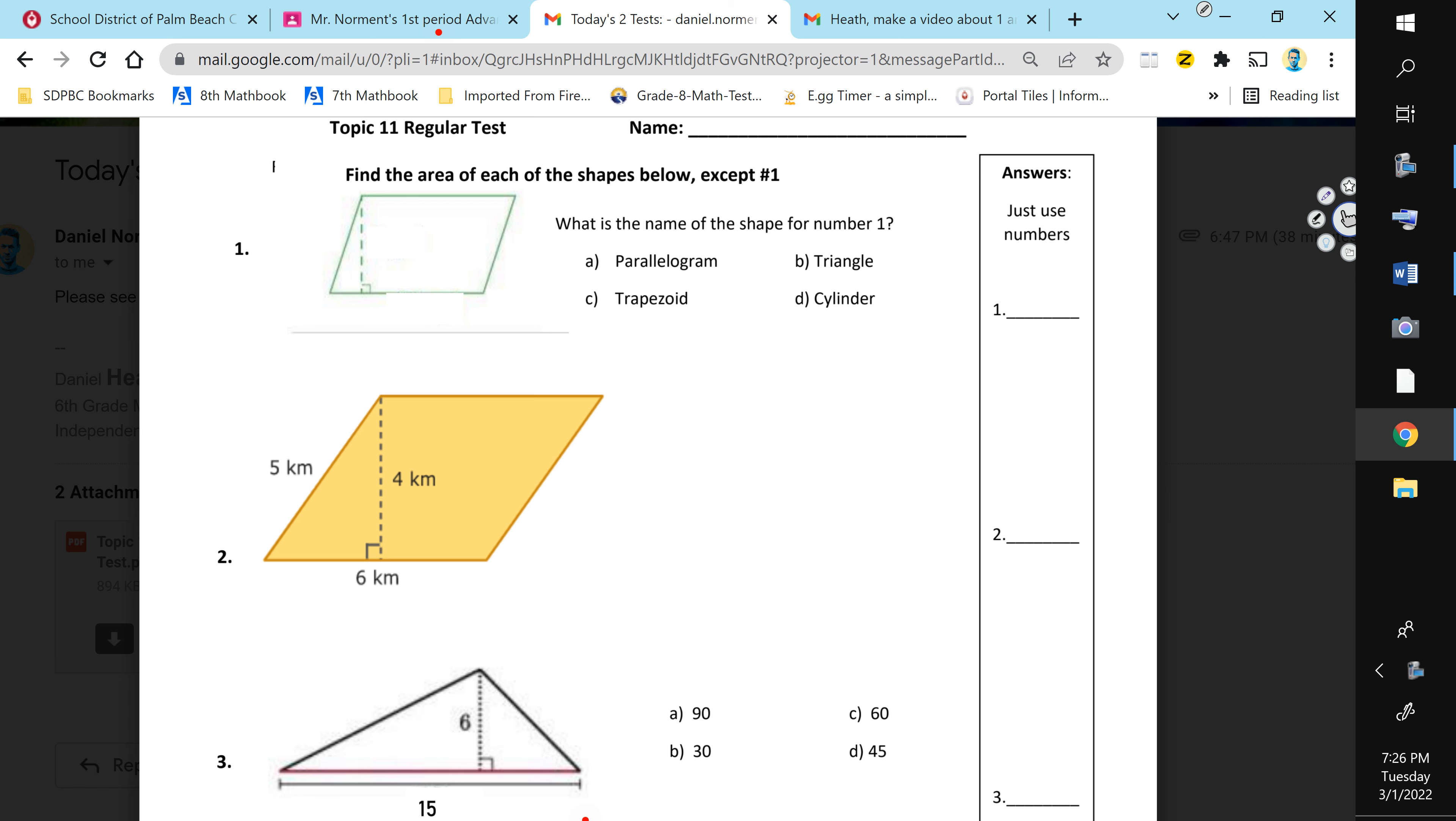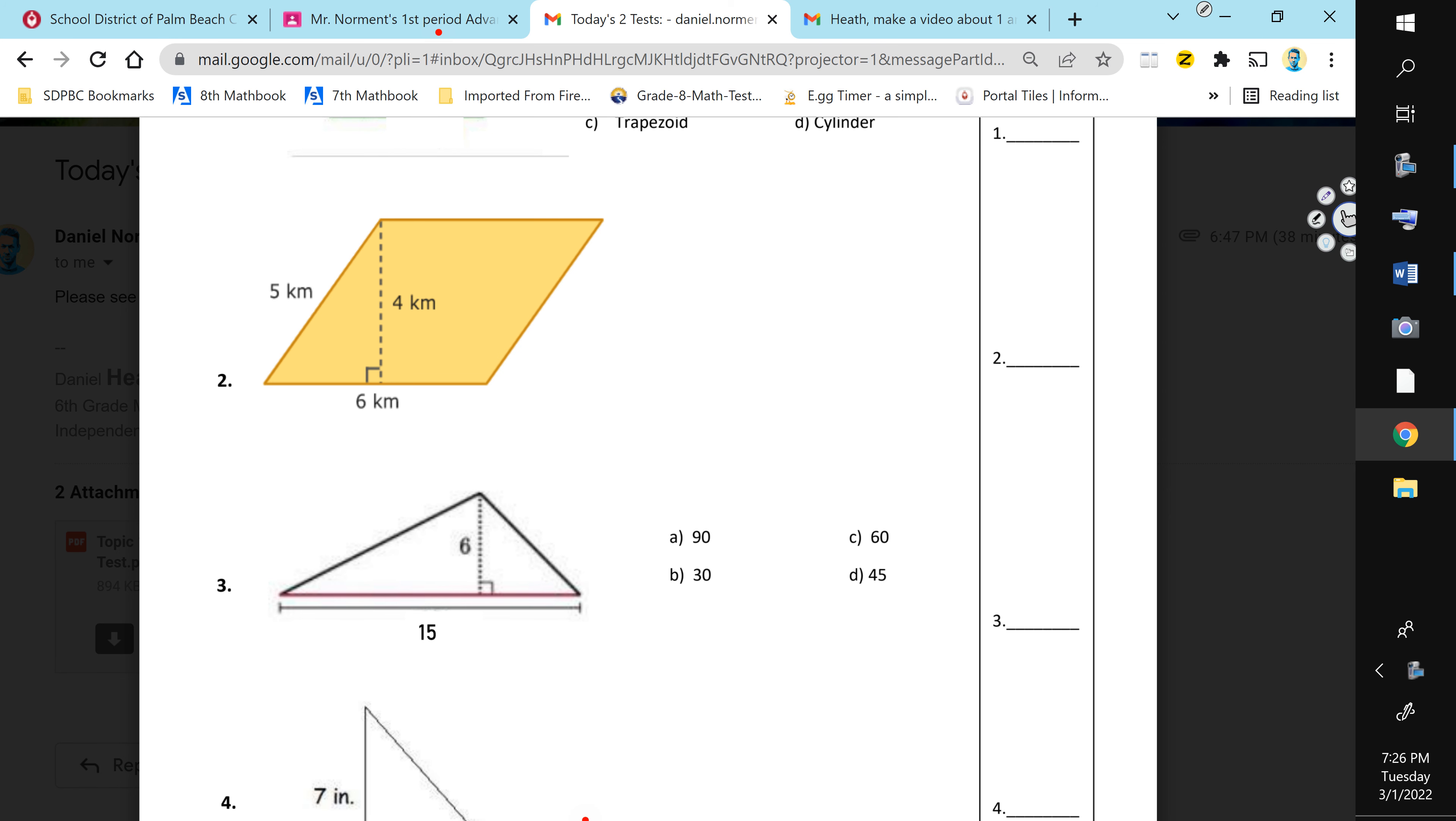Number two, all you need to do is take the base length times the height, and it's not a triangle, so don't cut it in half. Just do the base times the height, and you're going to be good. Now, if you need help multiplying, you're on your own with that one. Use your brain.